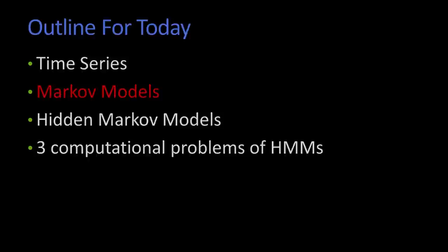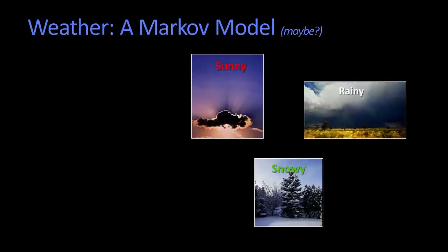All right, we're going to pretend for the moment that weather, as in the weather outside, is a Markov model. And if it were, we're also going to pretend that there's only three types of weather you could have. You could have a sunny day, a rainy day, or a snowy day. It's kind of like a little kid's book, right?